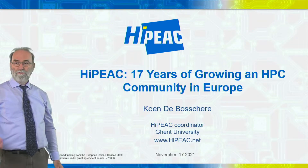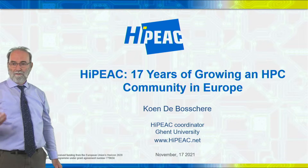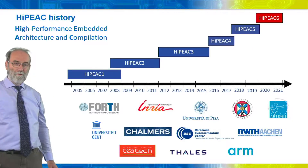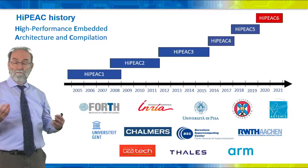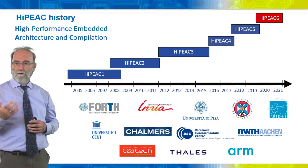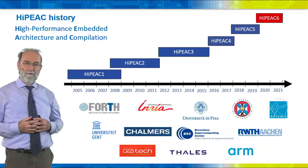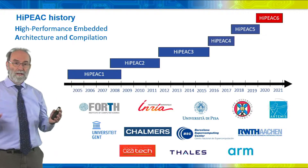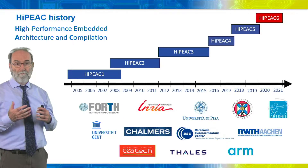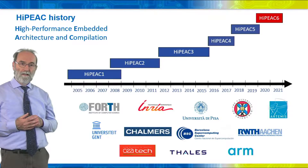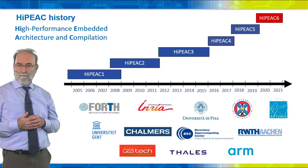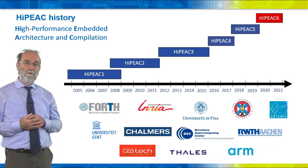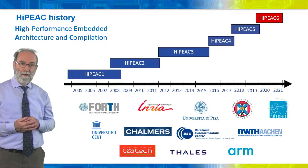Today I'm going to introduce you to HiPeak, the back office of HiPeak, and what it takes to grow an HPC community in Europe. We started 17 years ago, precisely in 2004, with HiPeak 1, which was a networking instrument called a network of excellence, and we got three networks of excellence in a row. After that we continued as a coordination and support action, another funding instrument by the European Commission. Today we are in the middle of HiPeak 6, running for another one and a half years, and last month I submitted a proposal for HiPeak 7. It's a project with partners — here you see an overview of the twelve partners involved in HiPeak 6.